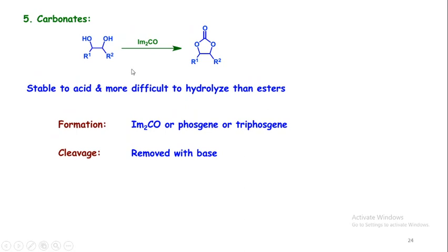The next method for the protection of a diol can be done through the formation of a carbonate. It can be obtained by using carbonyl di-imidazole, phosgene, or triphosgene. It is stable to acid and more difficult to hydrolyze than an ester. The diol can be converted into the carbonate using carbonyl di-imidazole or phosgene, and it is deprotected with the help of base.